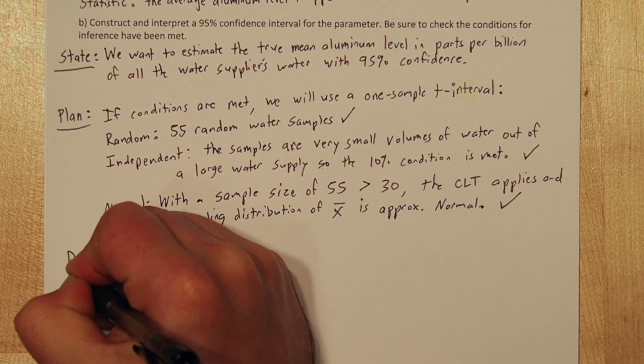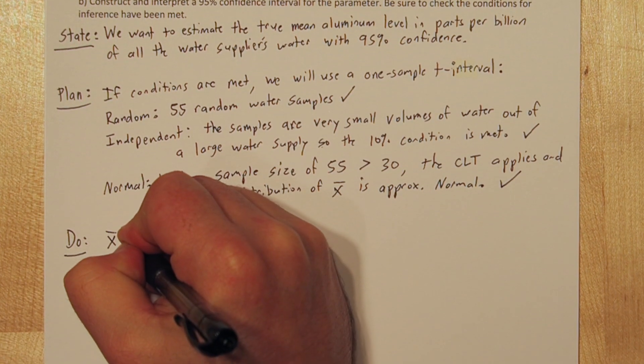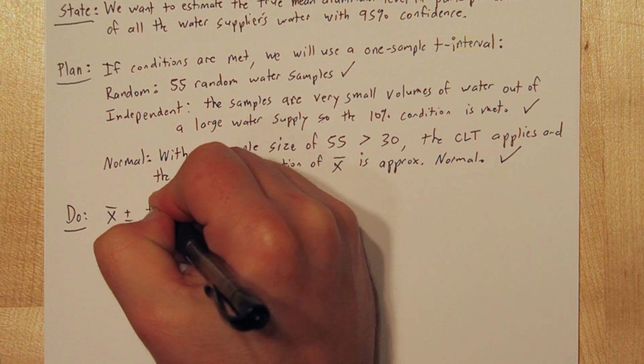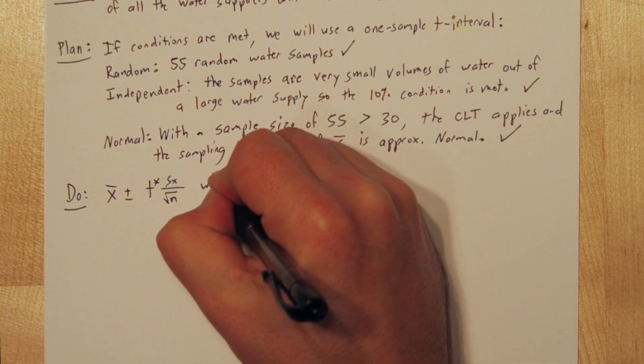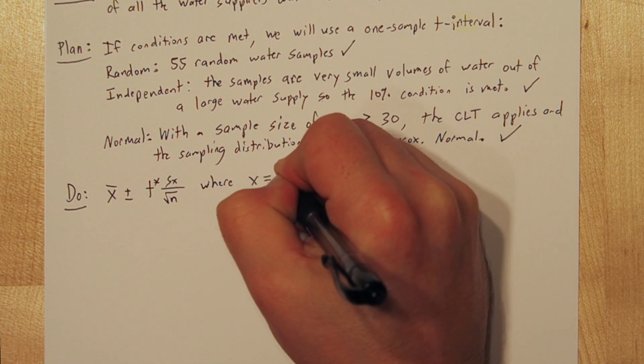Now we're ready to construct our interval. So we're going to take x-bar, our sample mean, add and subtract t-star times the standard error. The standard error is our sample standard deviation divided by the square root of the sample size.